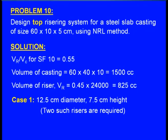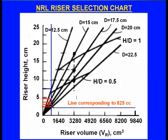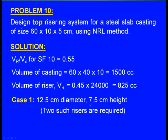The selected riser has diameter 12.5 cm and height 7.5 cm. This was designed for half of the casting (30 × 10 × 5 cm); the other half requires one more identical riser. So two such risers are required. In this lecture we have learnt how to design the riser and risering system using the NRL method. We will continue in the next lecture. Thank you.